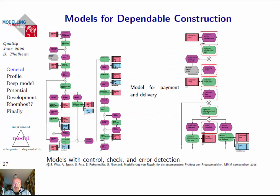You need quality treatment for process chains and for dependable construction of systems — if you are using the model as a mediator between what is currently given and what should be developed. You can check whether such a process chain is properly correct or has a number of flaws you should handle. This was described by Andreas Speck and his assistants in the MMM compendium published by Greuter five years ago.